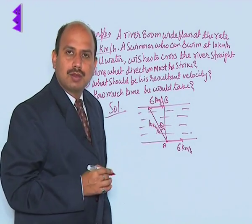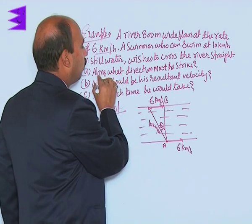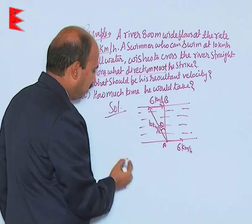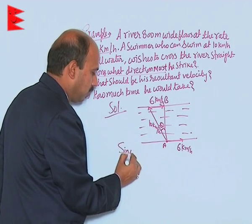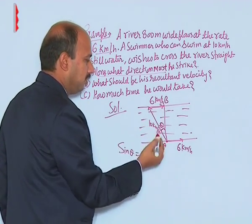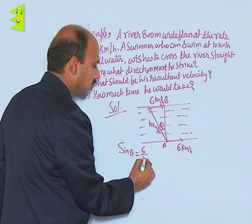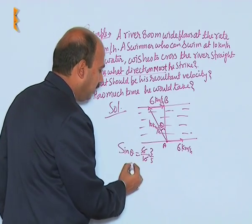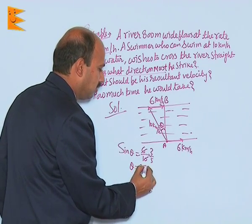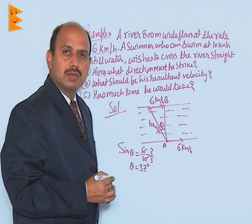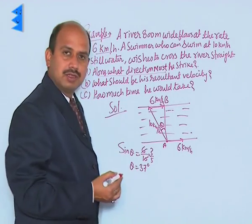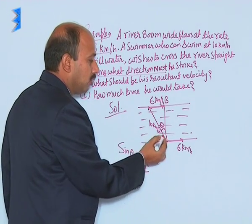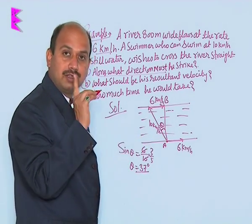Now, easily you can calculate first along what direction must he strike, it means theta you have to calculate. You can see here sin theta is equal to simply 6 by 10 that is 3 by 5 here, that means theta is equal to 37 degree. You can see that is in trigonometric table these values. Now, see theta is equal to 37, so the man should make his strokes.